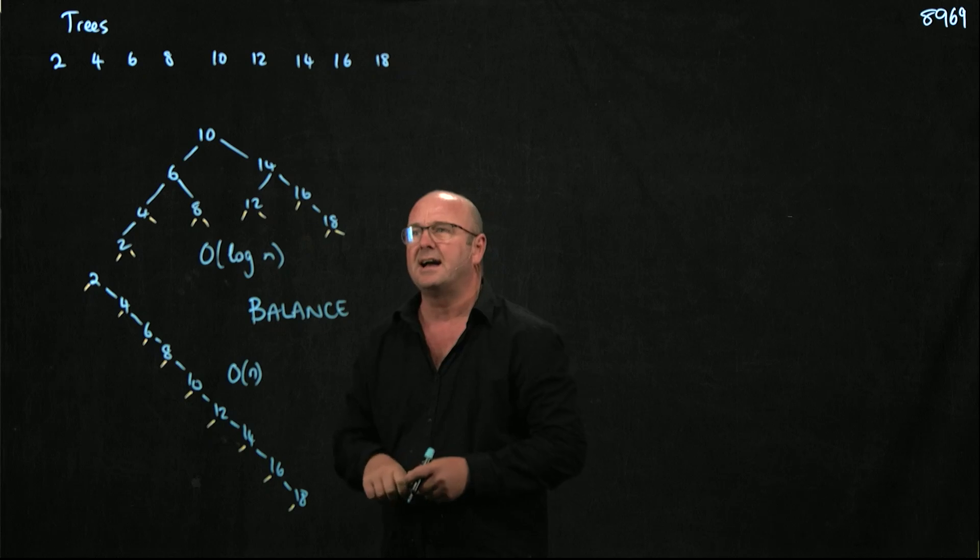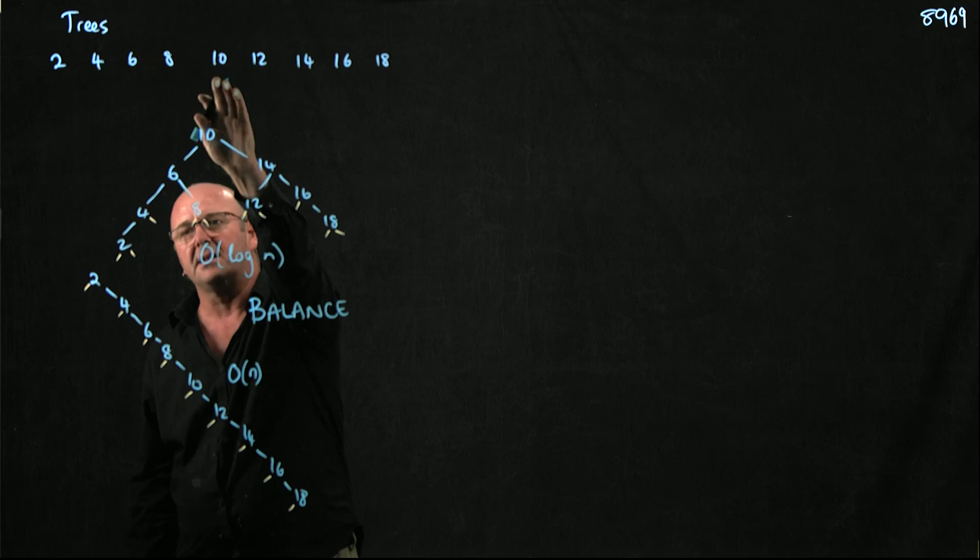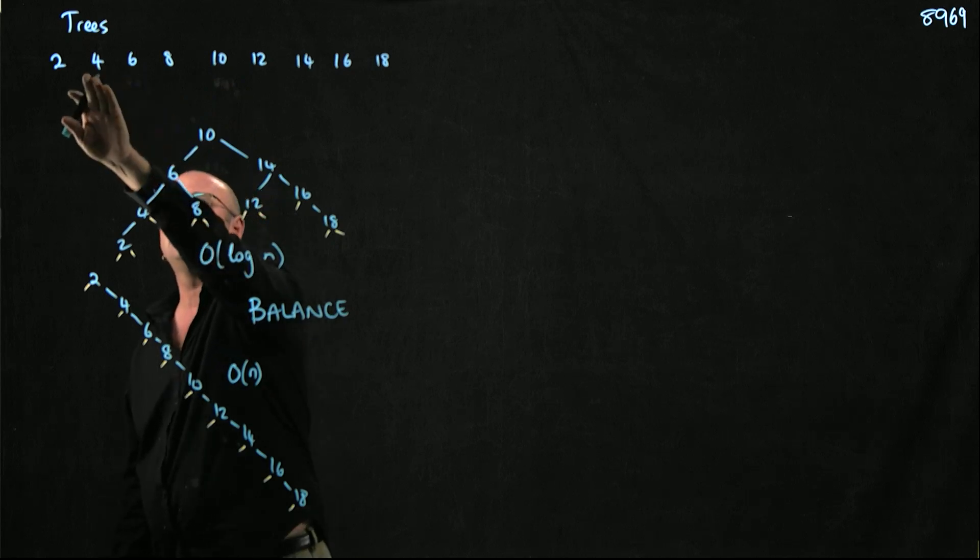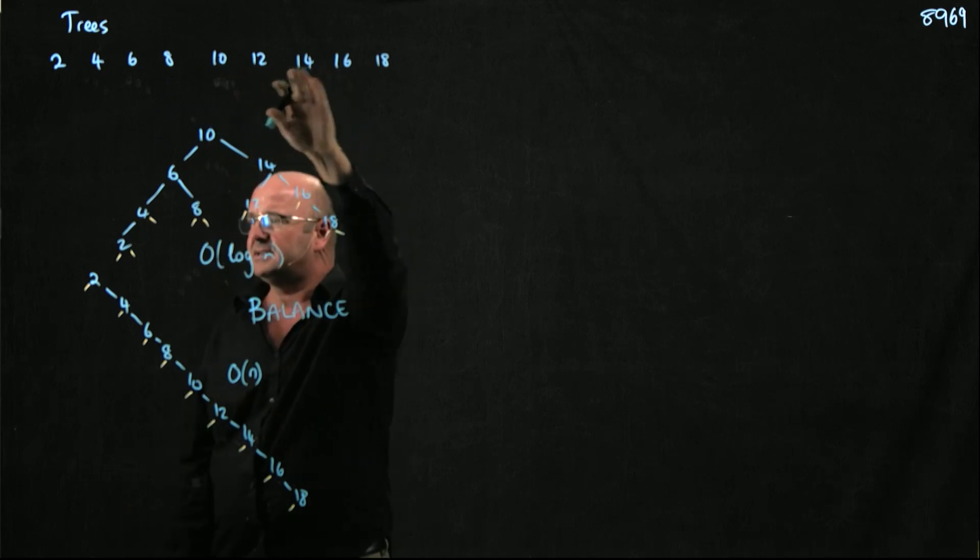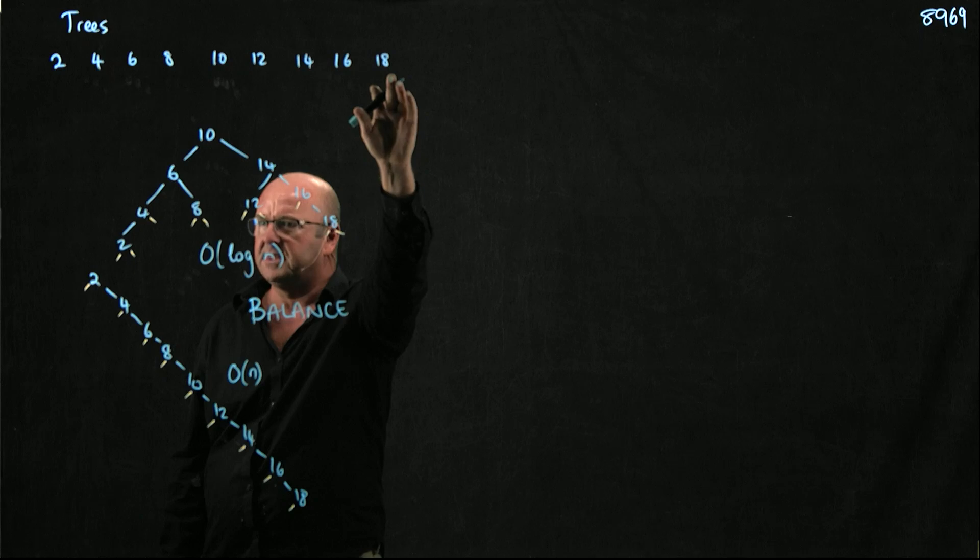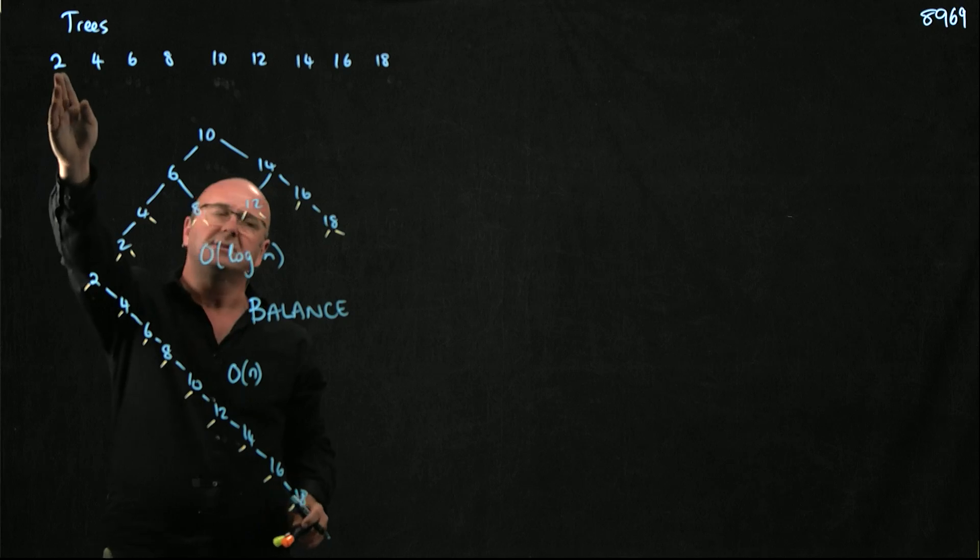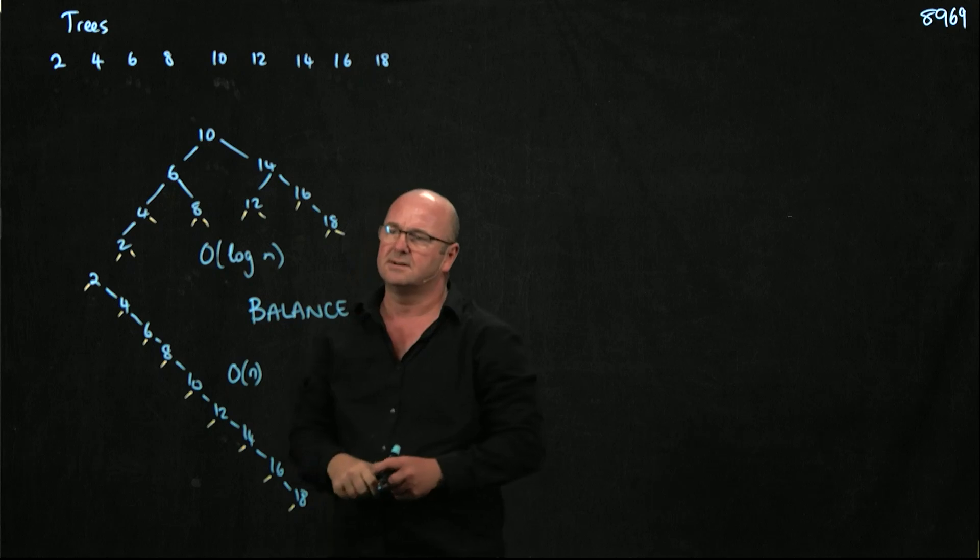Now if you notice, when I added the numbers to the top tree, what I did is I started in the middle at the 10. And then I went a half, and then I went a half, and then I went to the other half, and then I went on the right-hand side and did it the same way. And on the second tree, when I added the numbers, I started on the left, then I just went across the numbers, left to right.